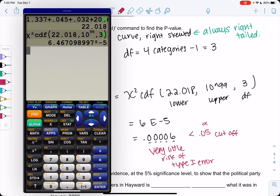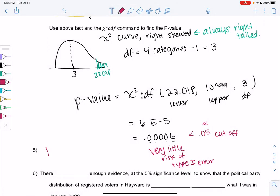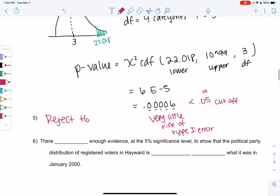Because it's very little risk, we're going to go ahead and reject H0. We're rejecting that the proportions are the same. So there is strong evidence at 5% to show that the political party distribution of registered voters in Hayward is different from what it was in 2000. We're rejecting that it's the same to prove that it's different.